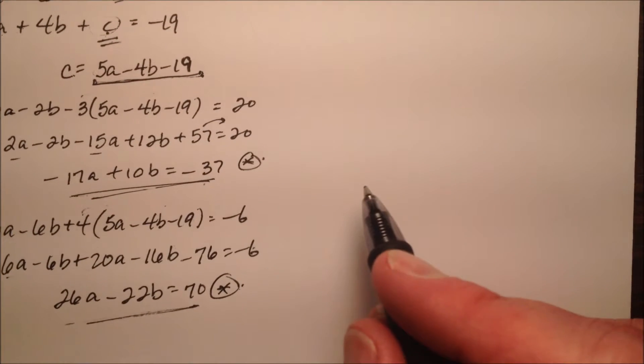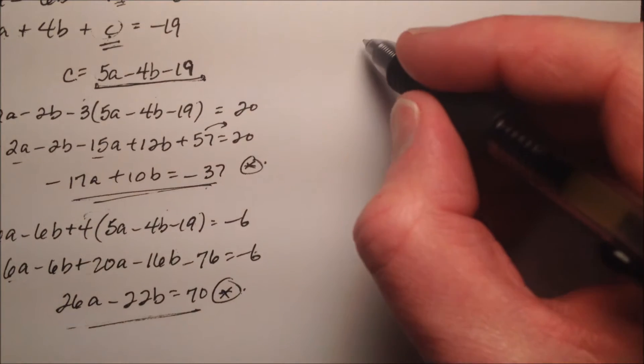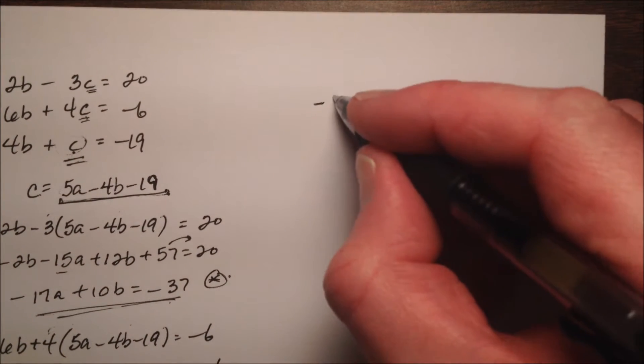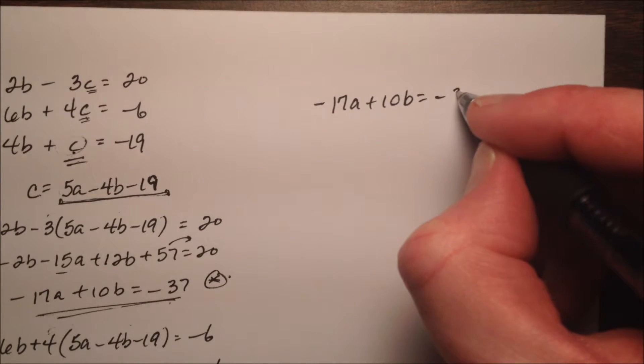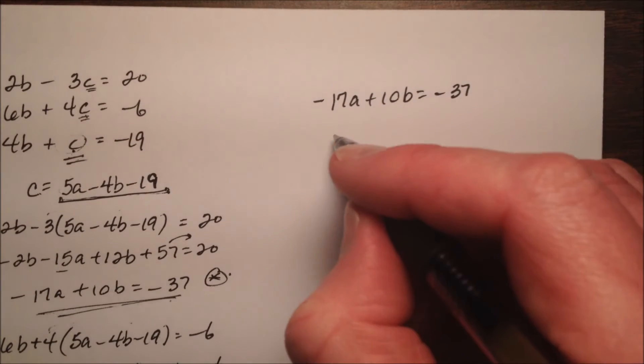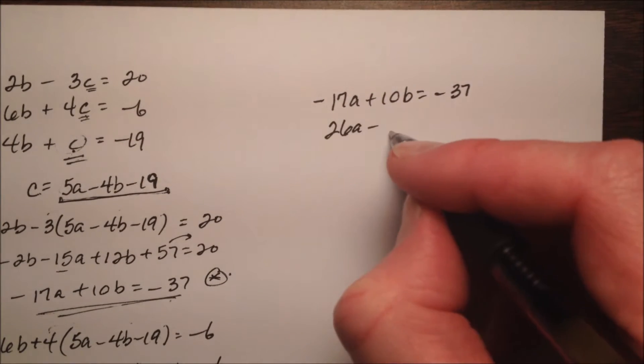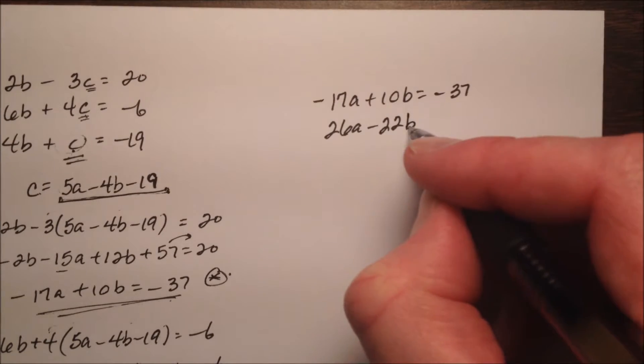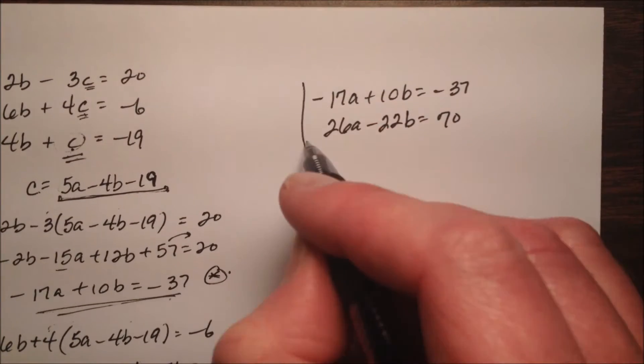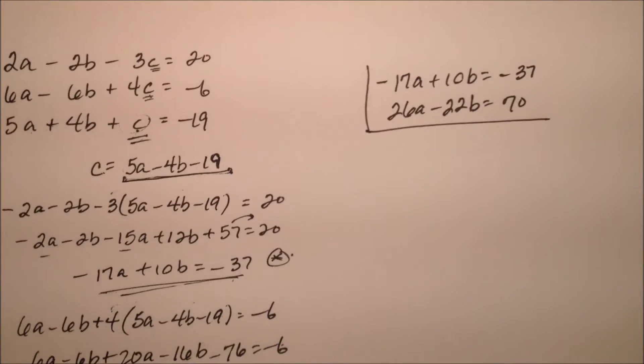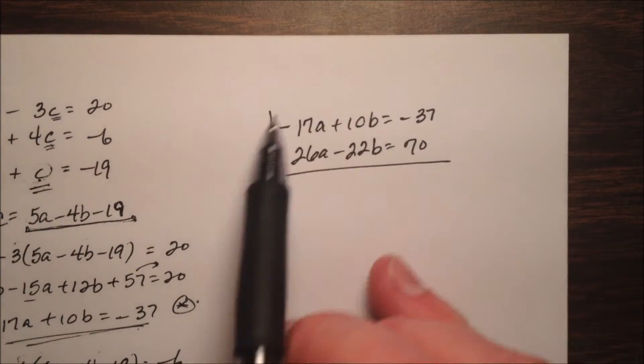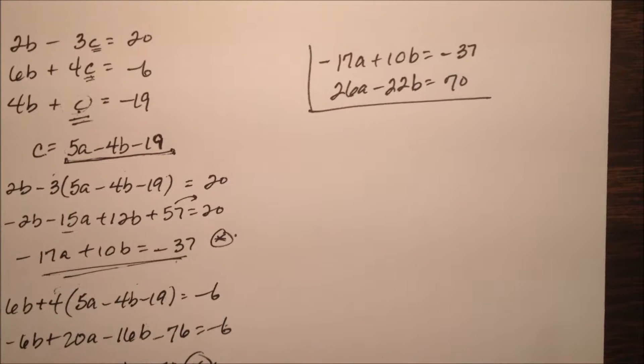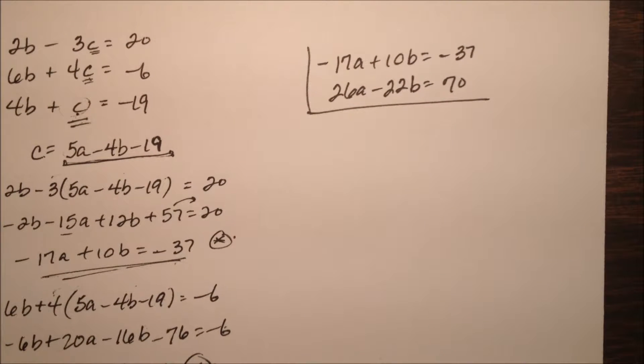So let's go ahead, and I'm going to move it over a little bit. I'm going to rewrite these equations up here at the top. So negative 17a plus 10b equals negative 37, and then 26a minus 22b equals 70. So I took this guy and this guy and just rewrote them, so now I have a new system, and I'm going to go ahead and solve this system by elimination.